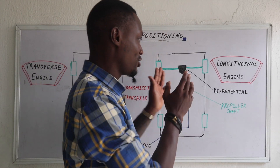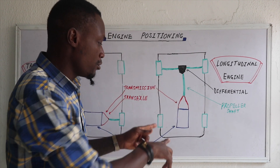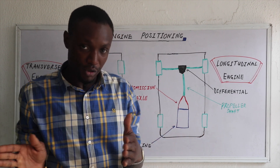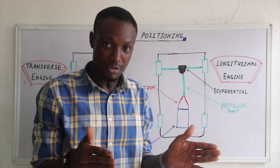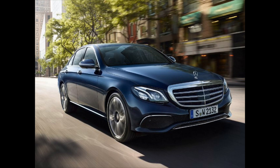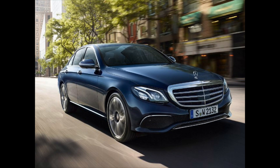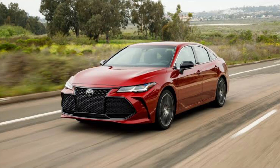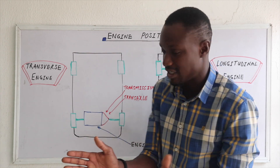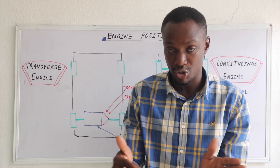Another advantage of the longitudinal engine positioning is that it gives a better turning angle. Because there's no drive shaft and fewer components in the engine bay, the front wheels have more angle to turn. So if you compare a transversely mounted front-wheel drive and a longitudinally mounted rear-wheel drive and test their turning circles, the longitudinally mounted rear-wheel drive has a better turning circle, because the drive shaft and components in the engine bay of the transverse layout limit its turning angle.